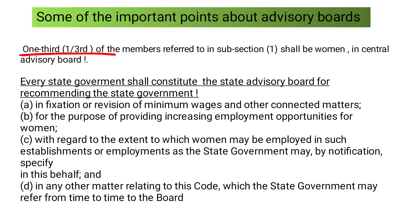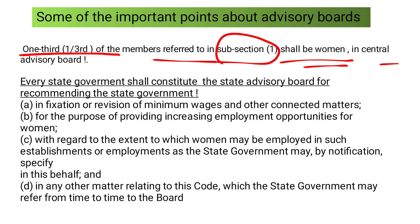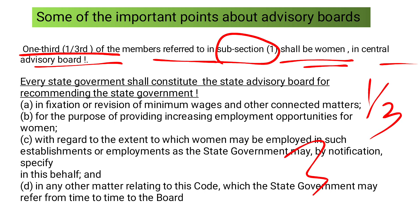One-third of the members referred to in subsection 1 shall be women in the Central Advisory Board. If they ask how many members or what percentage of women should be present in the Central Advisory Board, your answer should be one-third, or 33.33%. Remember this.